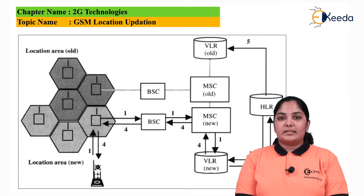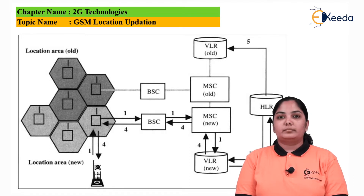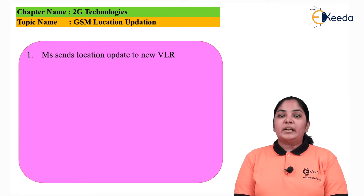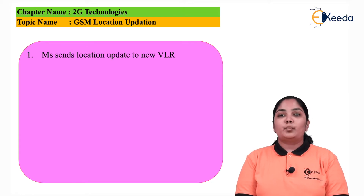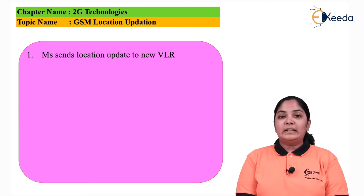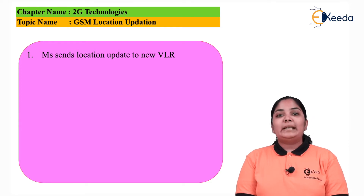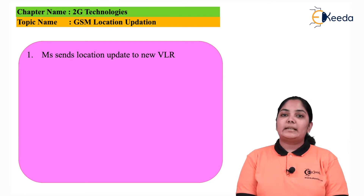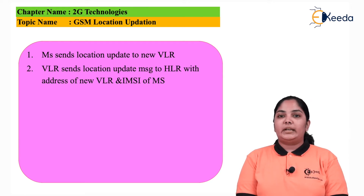In this diagram we can see various steps that are needed for location updation. Every component performs certain functions so that successful location updation is carried out. The first step is from the mobile station to the new VLR. In this diagram we can see there are various cells. Every cell has a BTS or base transceiver station. We have a mobile station, and the BTS is connected to the BSC, MSC, HLR, and VLR.